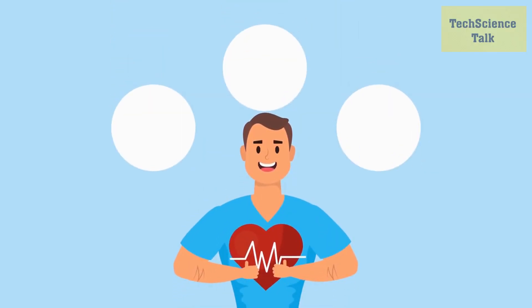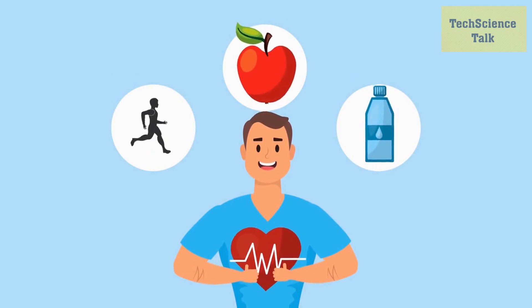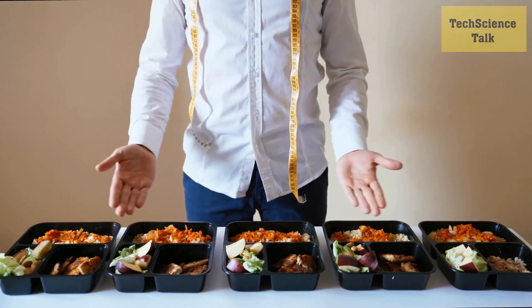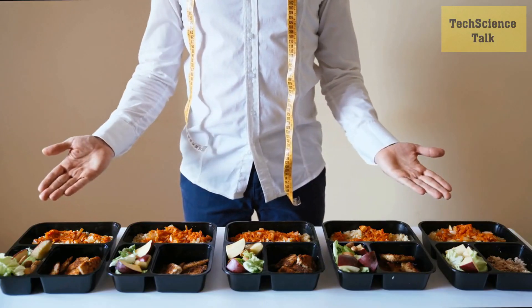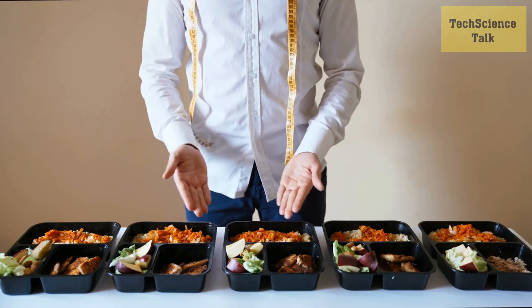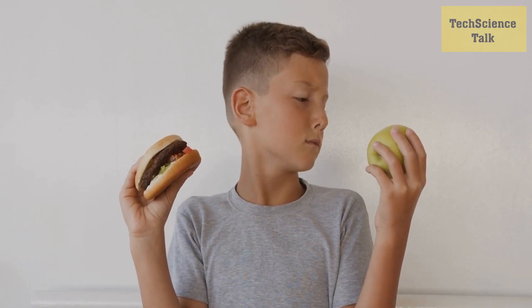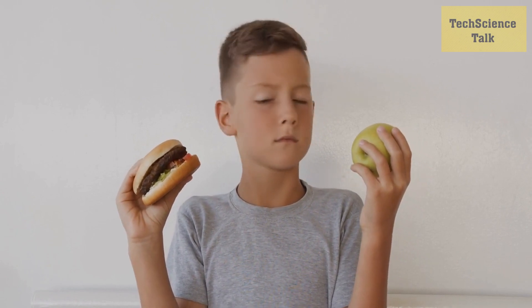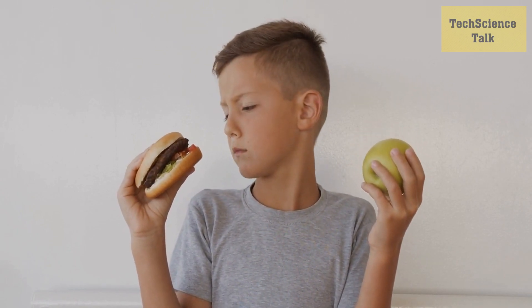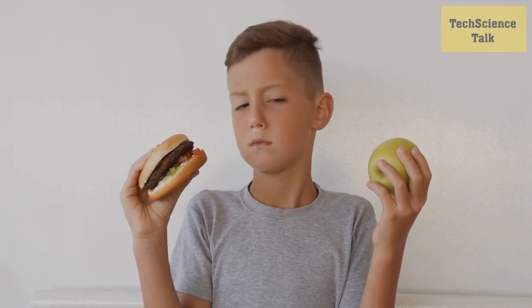Finally, lifestyle and environmental factors can also contribute to the aging process. Factors such as diet, exercise, stress, and exposure to toxins can all have an impact on how the body ages. By making healthy lifestyle choices and avoiding environmental toxins, it may be possible to slow down the aging process and reduce the risk of age-related diseases.